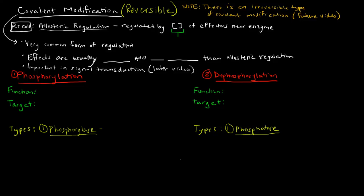So if you recall, allosteric regulation was the idea that enzymes could be regulated by the concentration of effectors near an enzyme. Allosteric regulation is pretty instant and rapid based on what's going on in that enzyme's environment — if there are inhibitors, they inhibit it; if there are activators, they activate it. That happens right away if those effectors are around the enzyme.